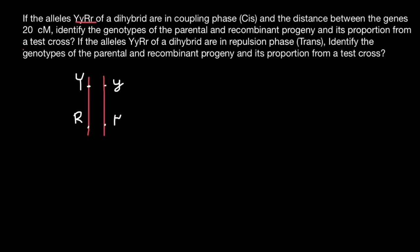We are also told that we have to perform a test cross. That means we take another parent of known genotype with the same genes, but instead of dominant Y, it's going to be recessive y, and instead of dominant R, recessive r on both chromosomes. So parent one here, parent two here — and we call this a test cross.